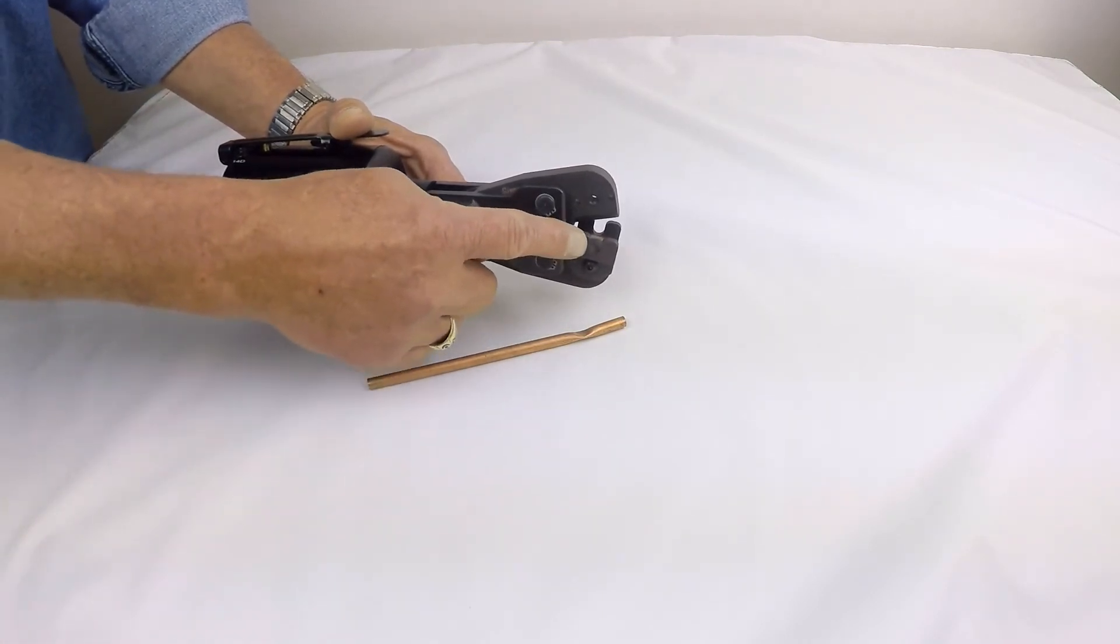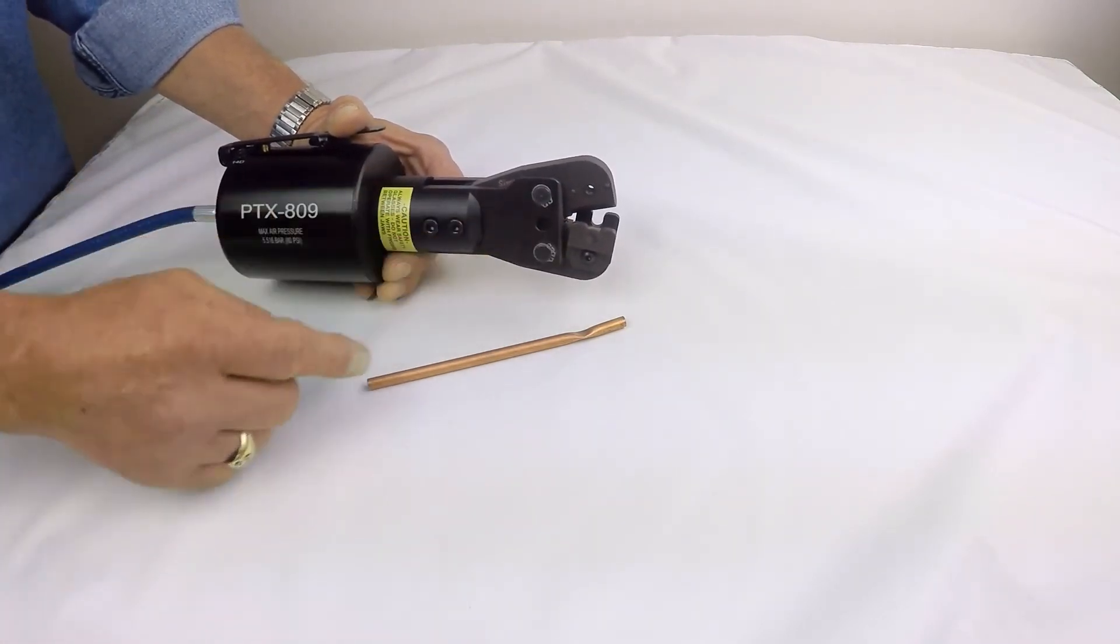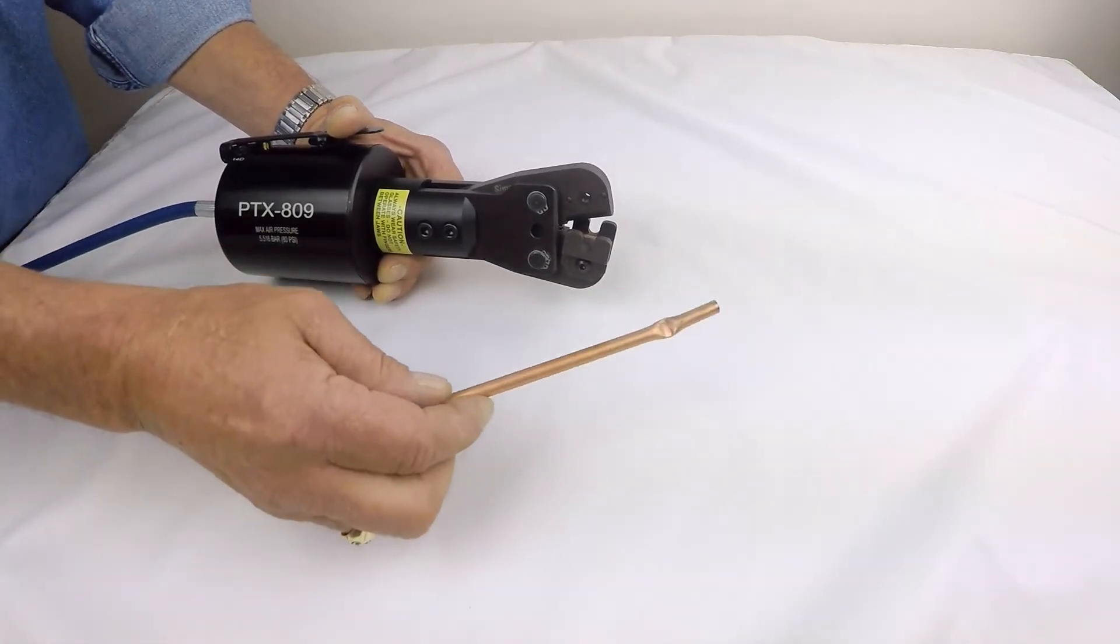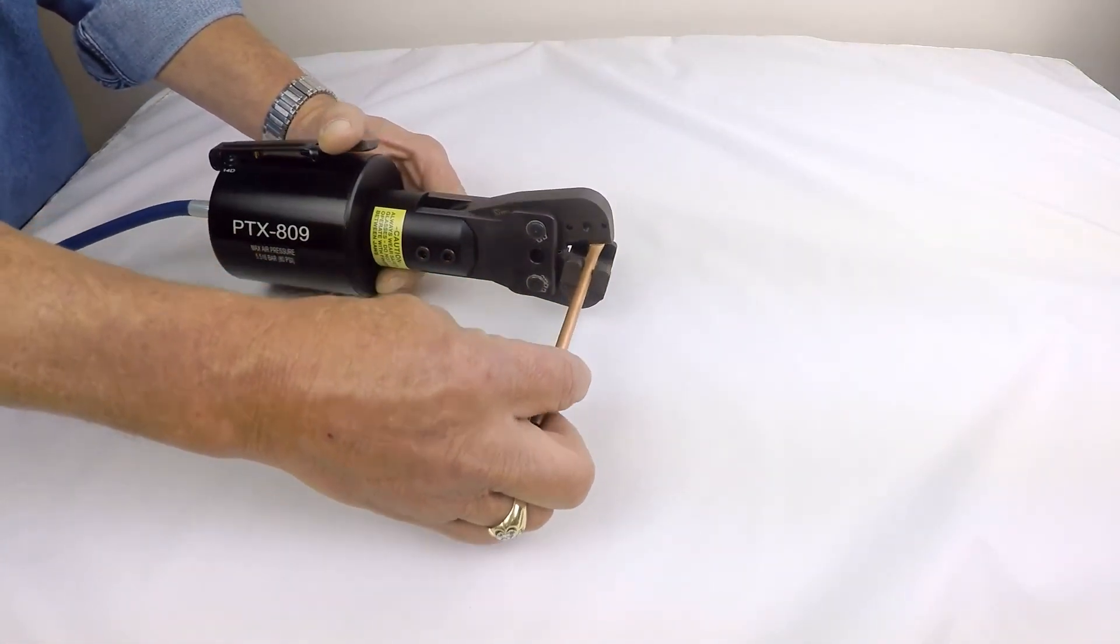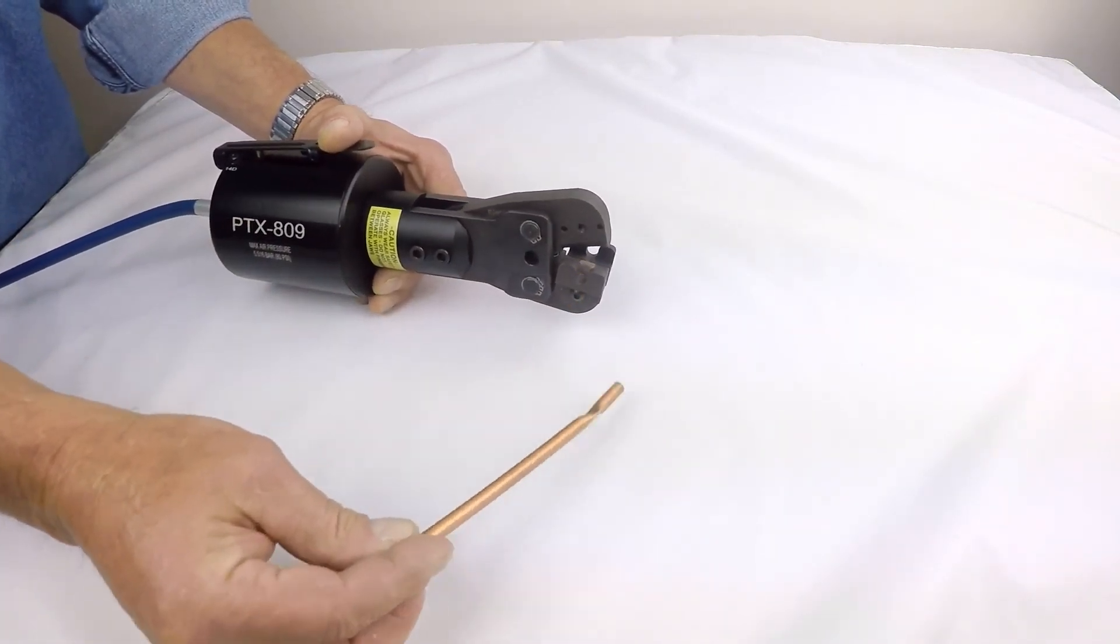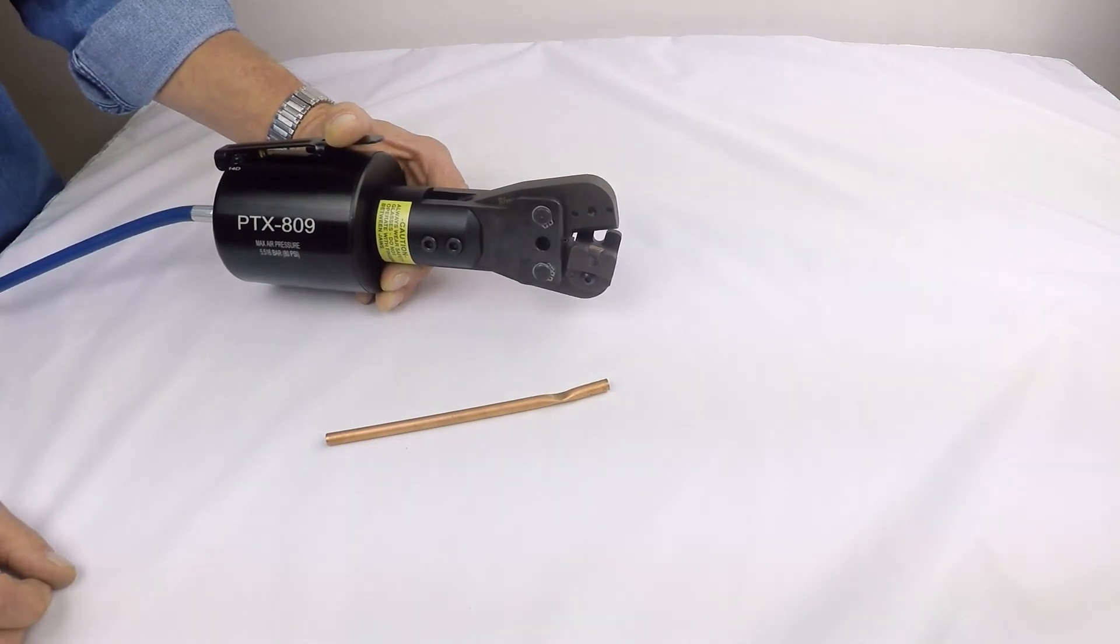The tool can be used with or without the tube guides. These tube guides are just on there to allow the technician to position the tube perfectly perpendicular to the jaws, but they can certainly be used without the guards and the guides if you wish.